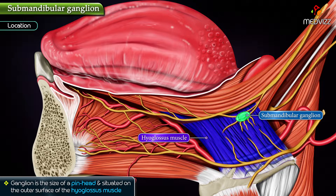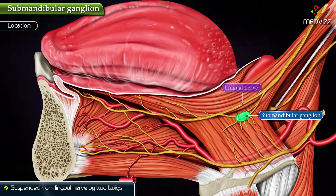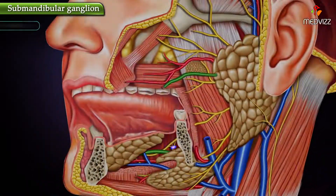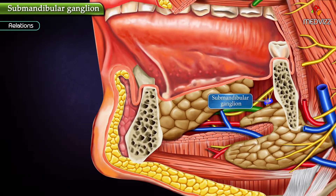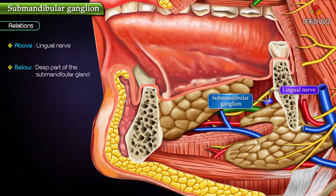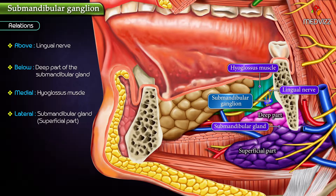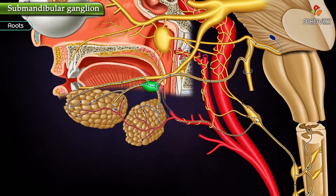Location: This ganglion is the size of a pinhead and is situated on the outer surface of the hyoglossus muscle. It is suspended from the lingual nerve by two twigs — the proximal twig is afferent to the ganglion and the distal twig is efferent to the ganglion. Relations: above is the lingual nerve, below is the deep part of the submandibular gland, medial is the hyoglossus muscle, and lateral is the superficial part of the submandibular gland.